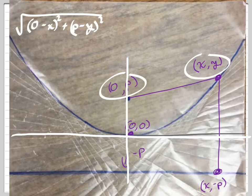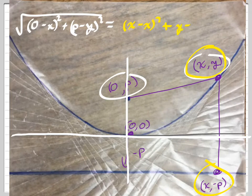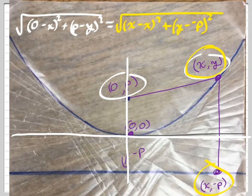I'm claiming that that equals this distance. Let's get a different color. So we'll use yellow for that point and that point. So we got x minus x, and we got to square that, and we subtract the y's. We get y minus negative p, and we got to square that. Okay, square root of all that.